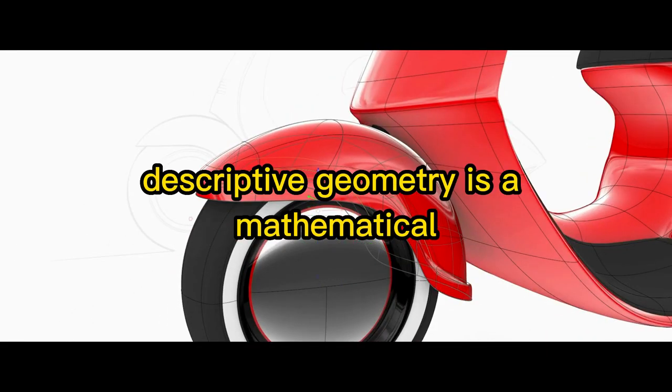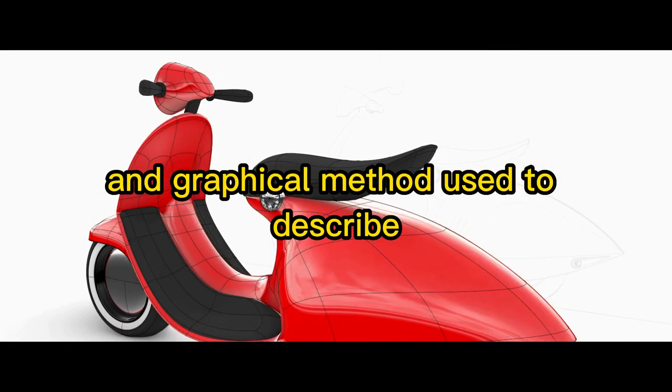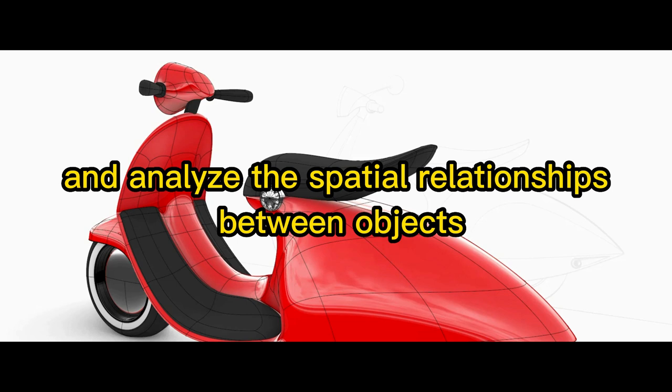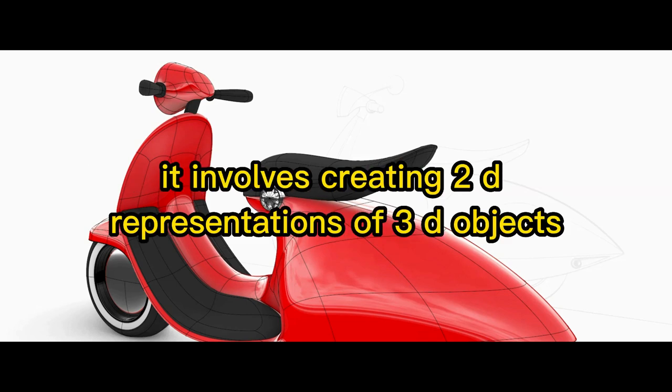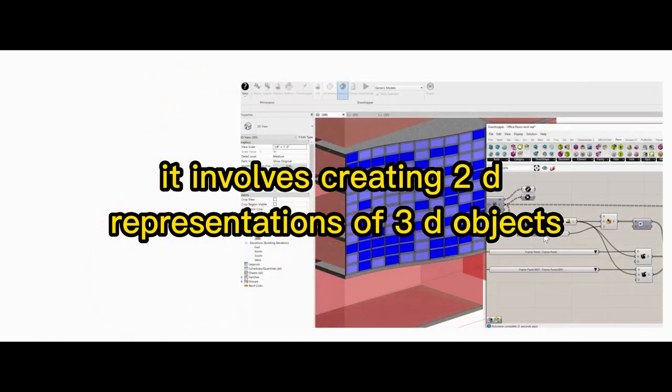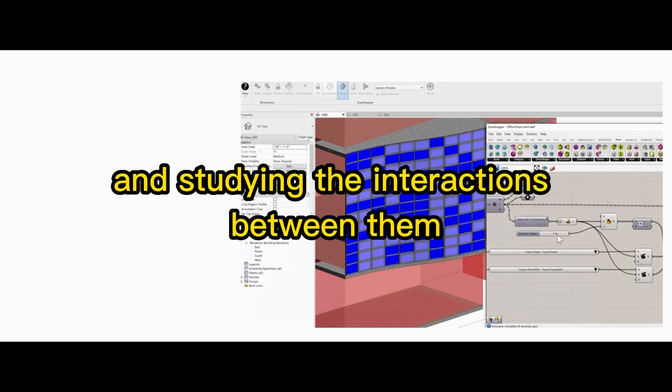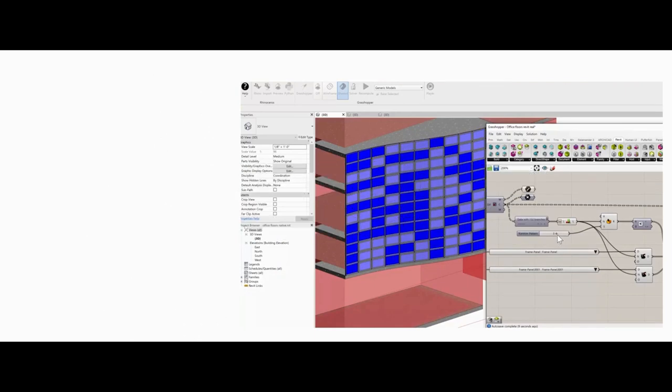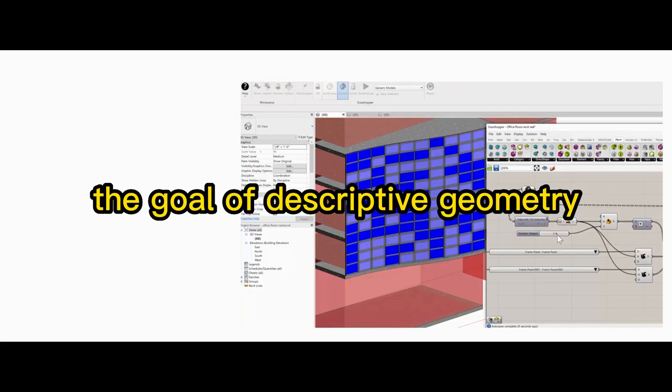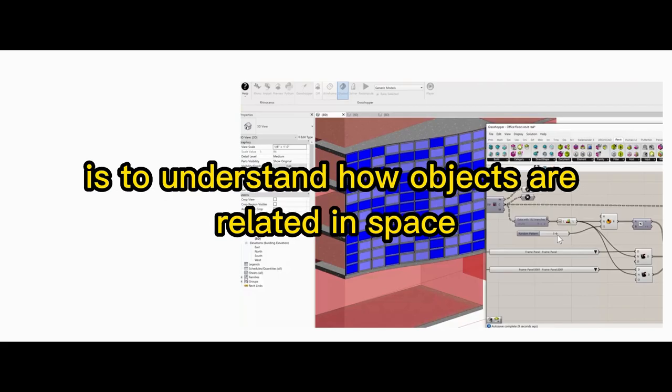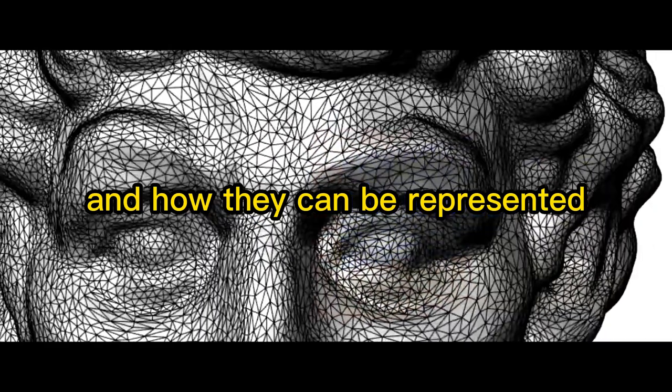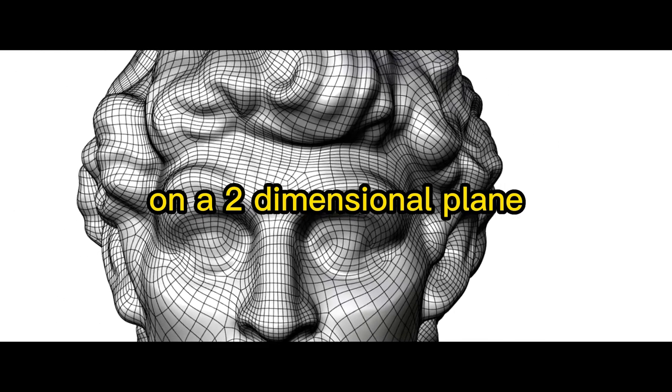Descriptive geometry is a mathematical and graphical method used to describe and analyze the spatial relationships between objects. It involves creating 2D representations of 3D objects and studying the interactions between them. The goal is to understand how objects are related in space and how they can be represented on a two-dimensional plane.